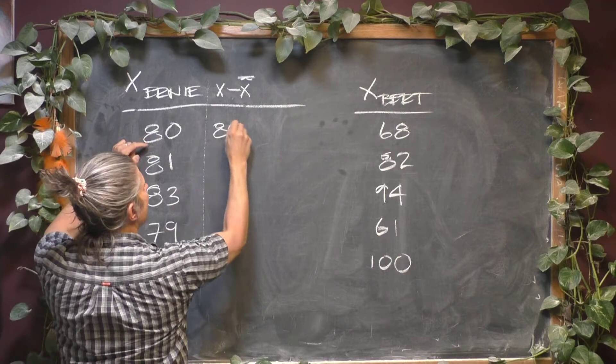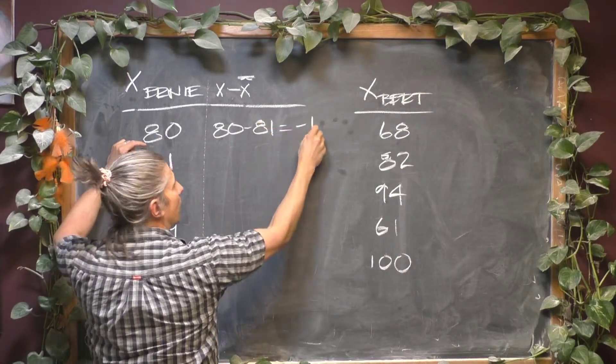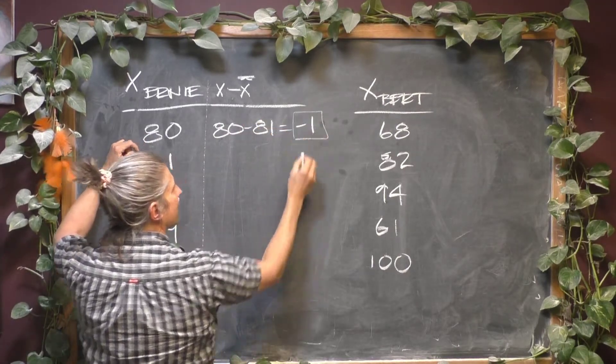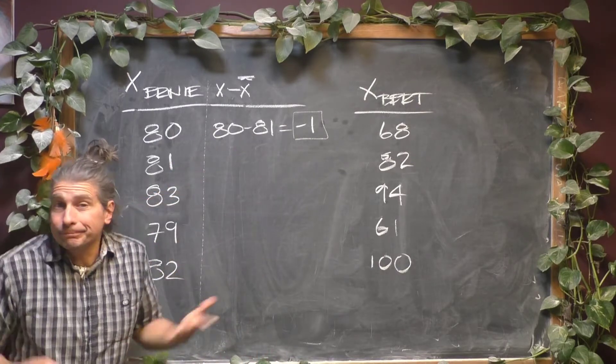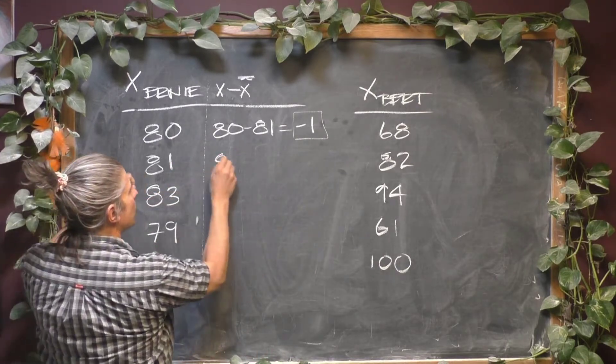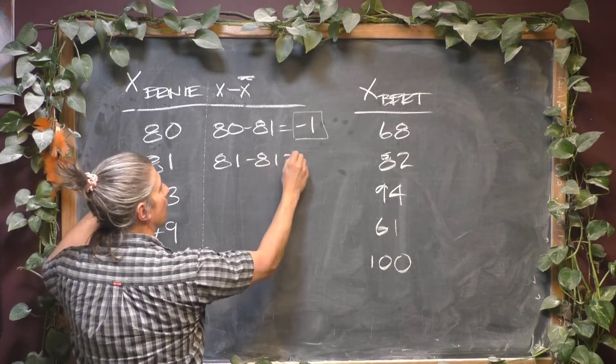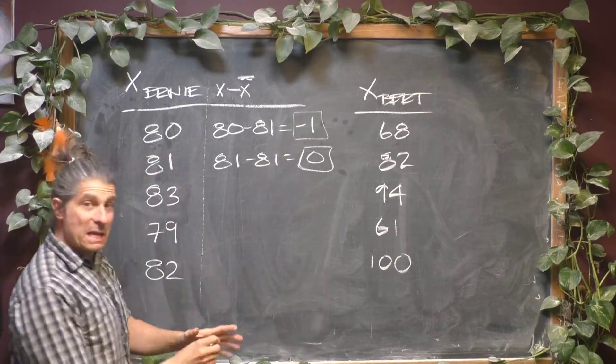So this is going to be 80 minus 81, which is going to be negative 1. There's the first deviation right there. And all that means is that score is 1 below average. 81 minus 81 shouldn't be a surprise. That's going to be 0. That is at average.